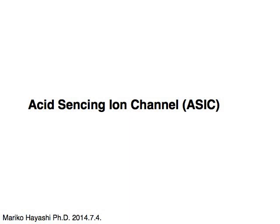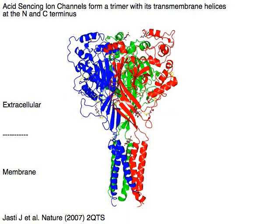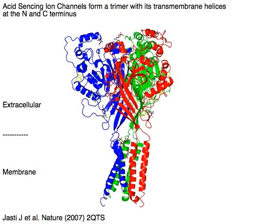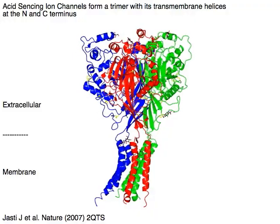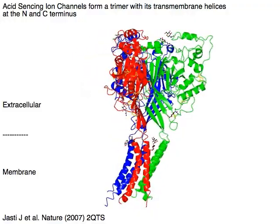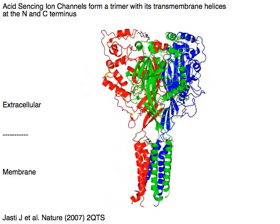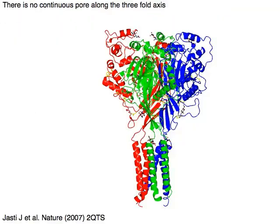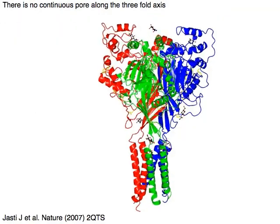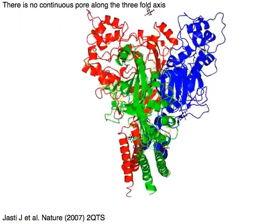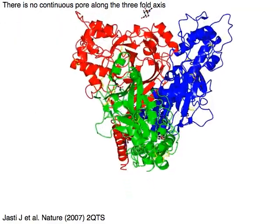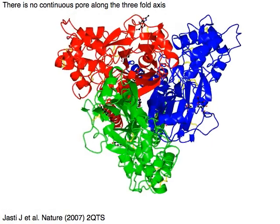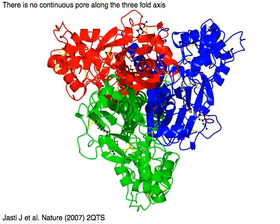Acid-sensing ion channel, or ASIC. Acid-sensing ion channels form a trimer, with transmembrane helices at the N and C terminus. There is no continuous pore along the threefold axis, suggesting the existence of some other site for ion transport.